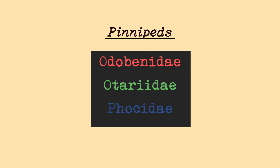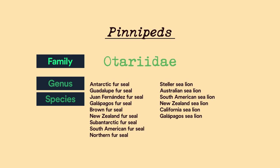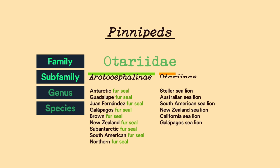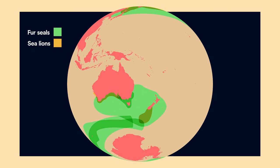The second pinniped family is Otariidae, which has nine species of seals and every species of sea lion. The family Otariidae is broken down into two subfamilies: Arctocephalinae, the fur seals, and Otariinae, the sea lions. Every member of Otariidae is an eared seal, because they have external ear flaps called pinnae. Fur seals and sea lions can be found mostly in the southern hemisphere, with four species in the north Pacific.